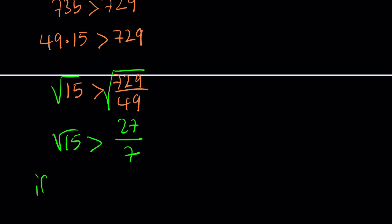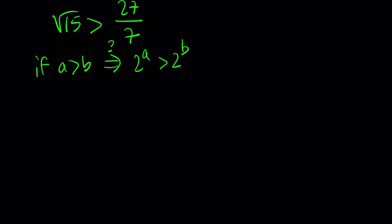Well, if a is greater than b, does that imply 2 to the a greater than 2 to the b? Or does that depend on the numbers? True or false? I want you to think about it. But here's what I'm going to tell you. If we know that the square root of 15 is greater than 27 over 7, are you ready? Then this implies that 2 to the power square root of 15 is greater than 2 to the power 27 over 7.